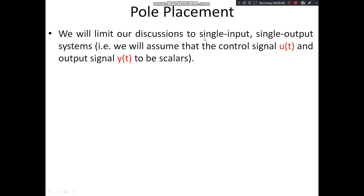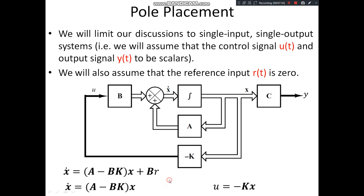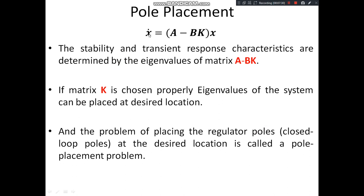We will limit our discussion to a single-input single-output system, assuming that the control signal U and output signal Y are scalar. We also assume that the reference input R(t) = 0. Therefore, U = -KX, and the system equation becomes X-dot = (A - BK)X. The control input U is totally dependent upon the gain matrix K and the state variable X, giving X-dot = (A - BK)X.